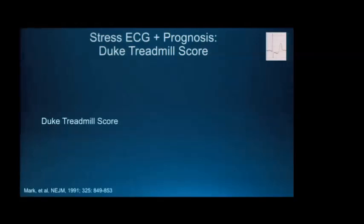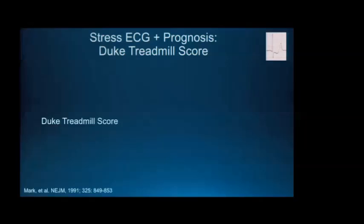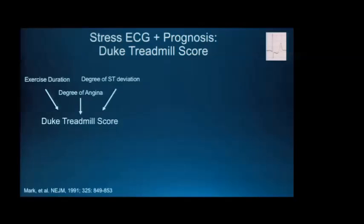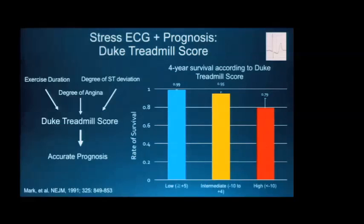Although the diagnostic sensitivity of the stress ECG is not great, we continue using it because of the powerful prognostic information it provides. The Duke Treadmill Score has been the most robustly studied and validated scoring system over the past few decades. It is a simple score based on exercise duration, degree of ST-segment deviation, and degree of angina, and through simple arithmetic we calculate a score that provides very accurate prognosis.